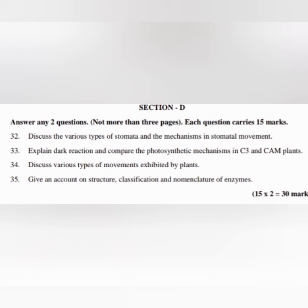Section D: Answer any two questions, not more than three pages. Each question carries fifteen marks. Question 32: Discuss the various types of stomata and the mechanisms in stomatal movement. Question 33: Explain dark reaction and compare the photosynthetic mechanisms in C3 and CAM plants. Question 34: Discuss various types of movements exhibited by plants. Question 35: Give an account on structure, classification, and nomenclature of enzymes.